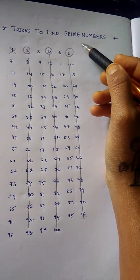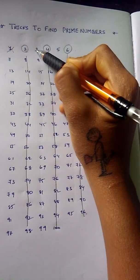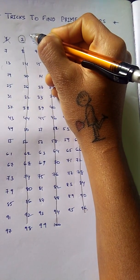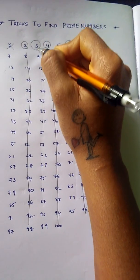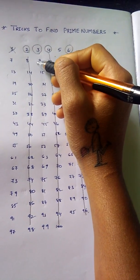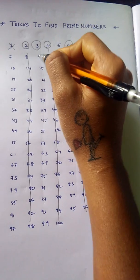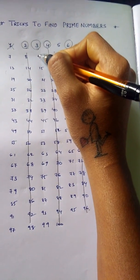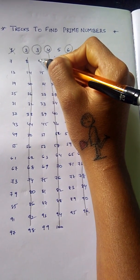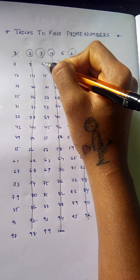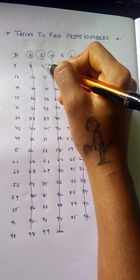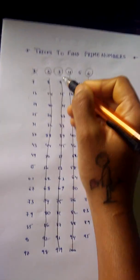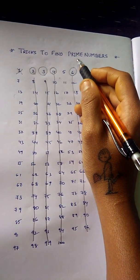Now going to the next number, 3. 3 is a prime number. Under this 3 in this column, you find all numbers which are multiples of 3, so they cannot be prime numbers. So I have striked all these numbers in this column except 3, because 3 is a prime number. Now going to 5.